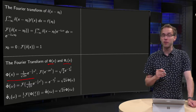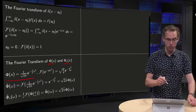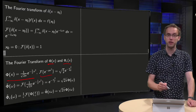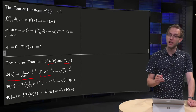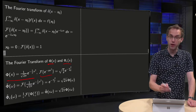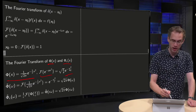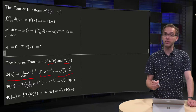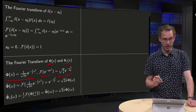Earlier we saw how to compute the Fourier transform of a Gaussian. The Fourier transform of e to the power of minus a x squared yields another Gaussian: e to the power of minus omega squared over 4a, with an additional factor of square root of pi over a.